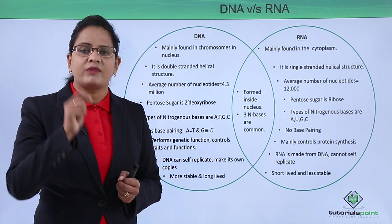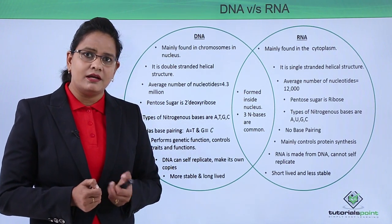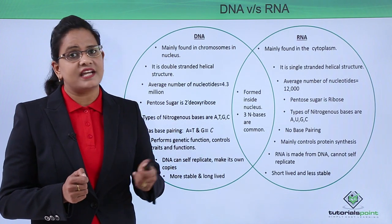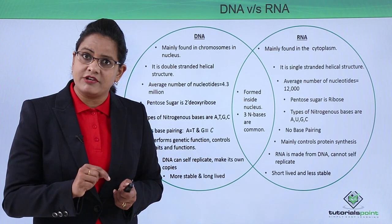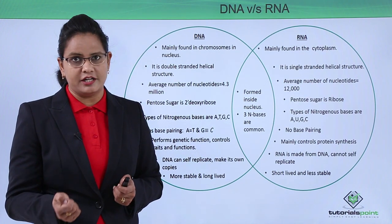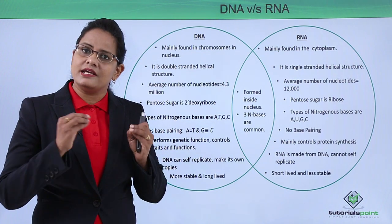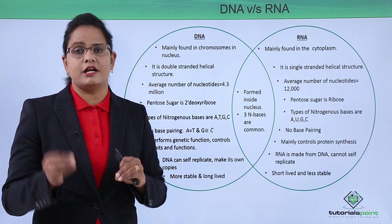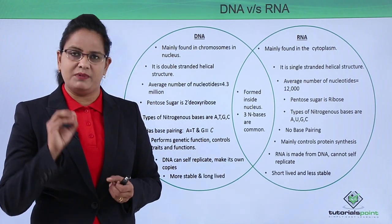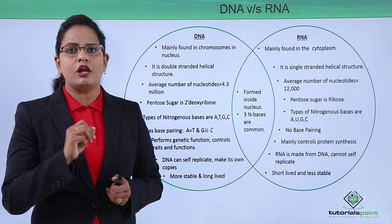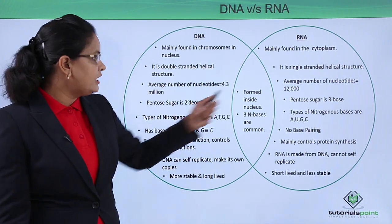There are three types of RNA: mRNA, tRNA, and rRNA. As for DNA, different types exist — such as A-DNA, B-DNA, and C-DNA — but these are specifically formed under certain conditions. In our body under normal conditions, the most stable form of DNA is B-DNA.